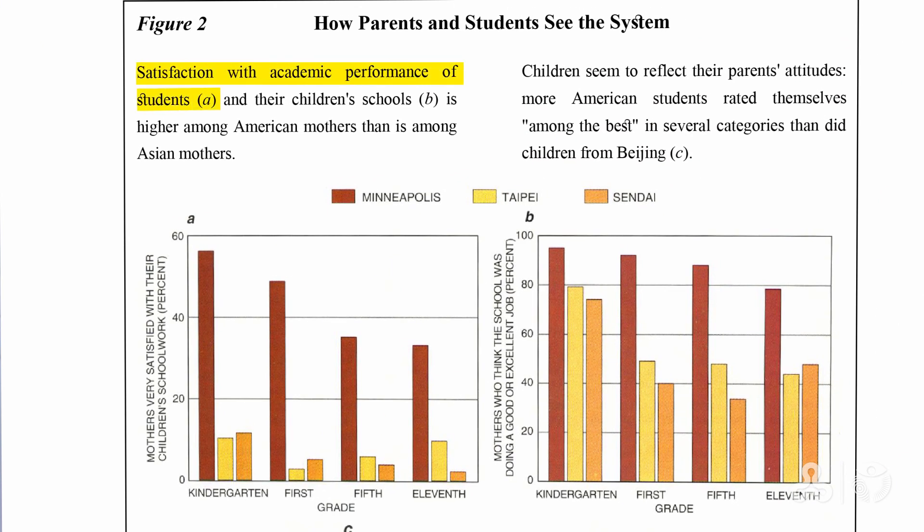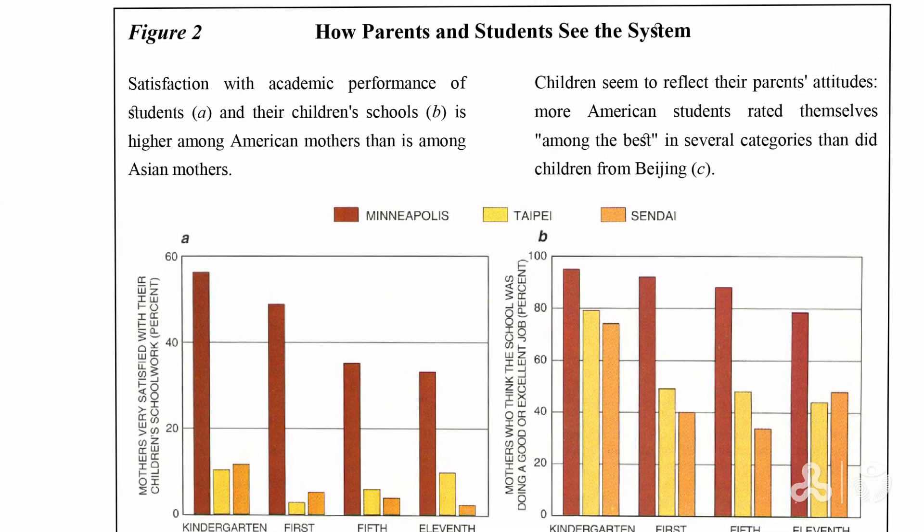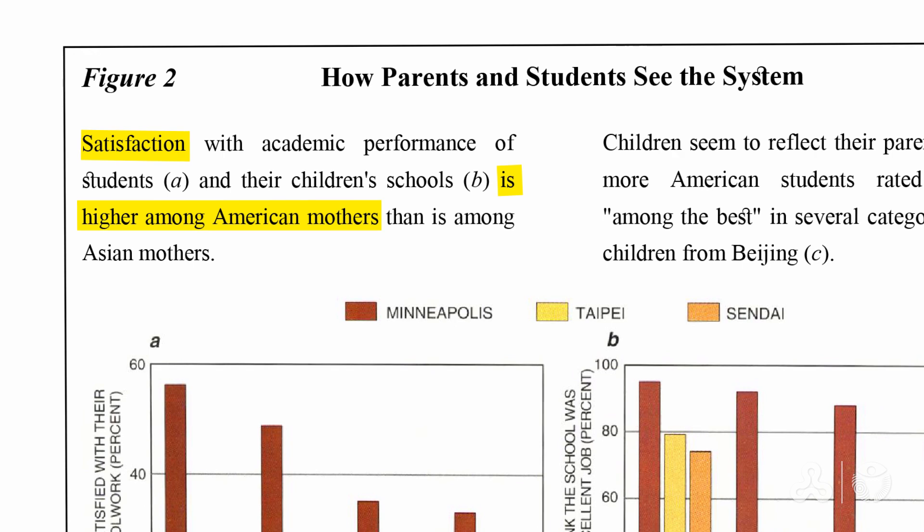If we look at the explanations above, it says satisfaction with academic performance of students, that's A, and their children's schools, that's B, is higher among American mothers than among Asian mothers. If you were in doubt, or didn't understand the bar graphs, then you have it all written down very clearly.